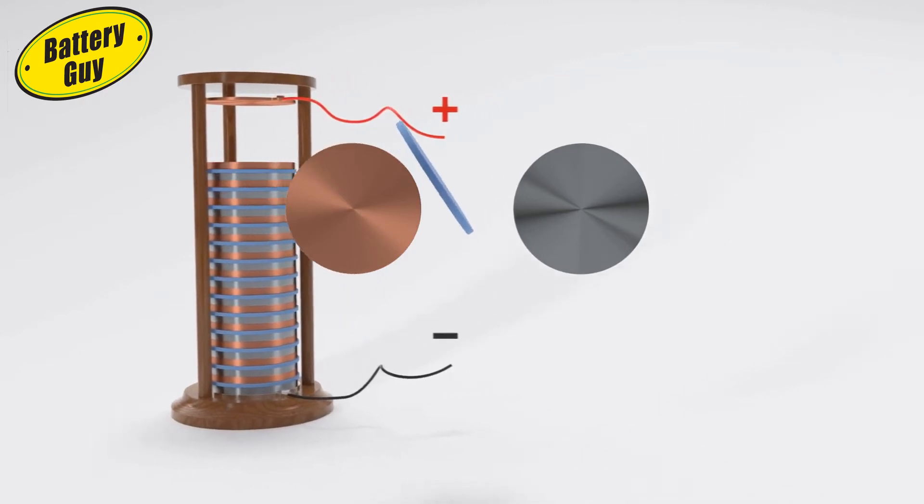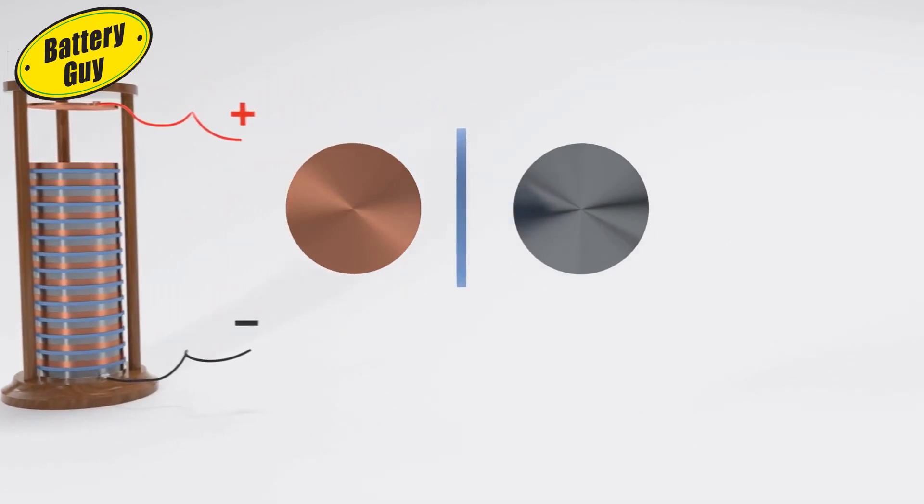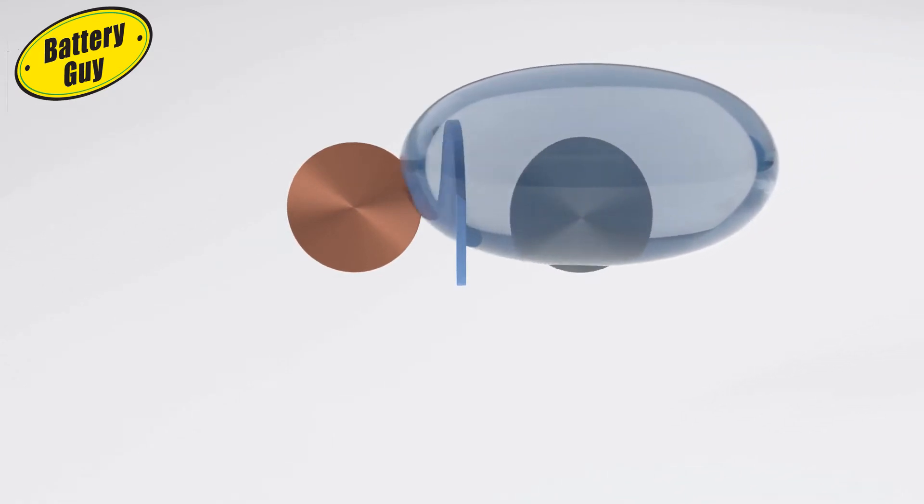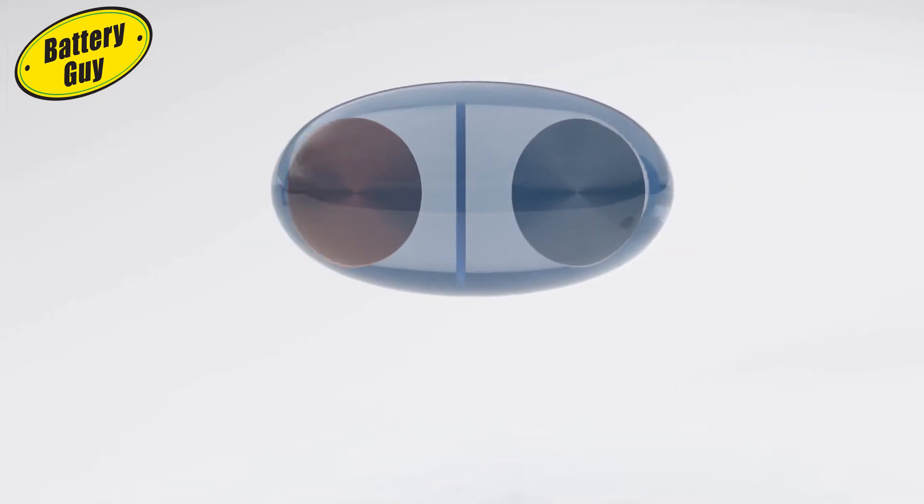The anode and cathode are kept physically apart with a separator, but for the cell to work both are placed in contact with each other via electrolyte.